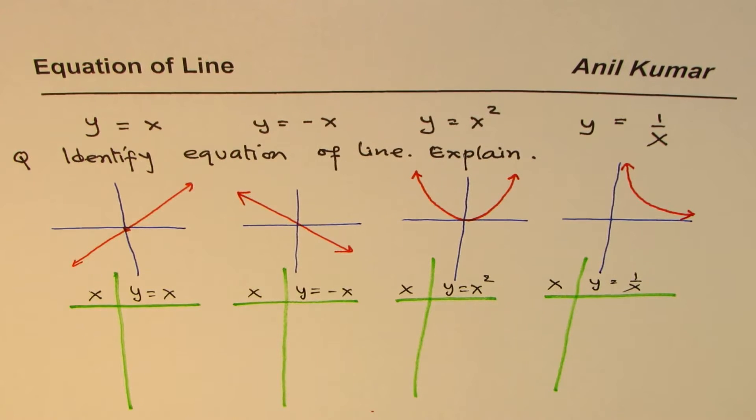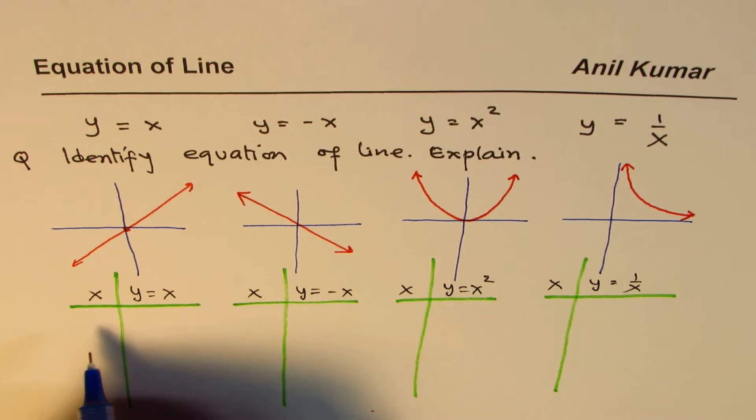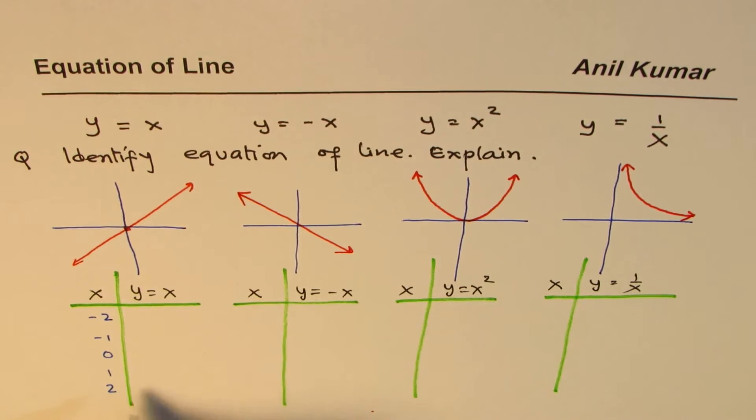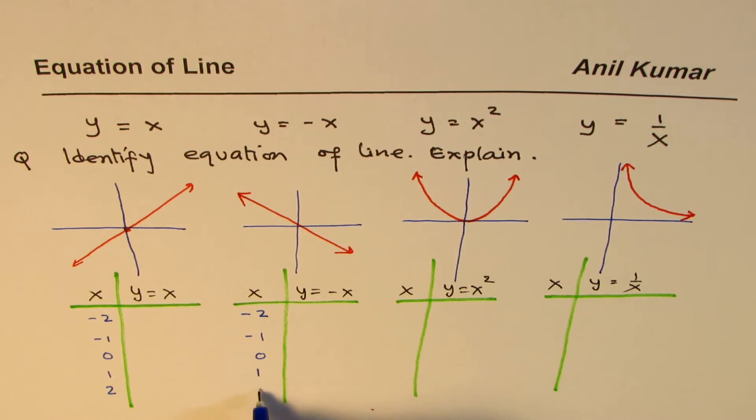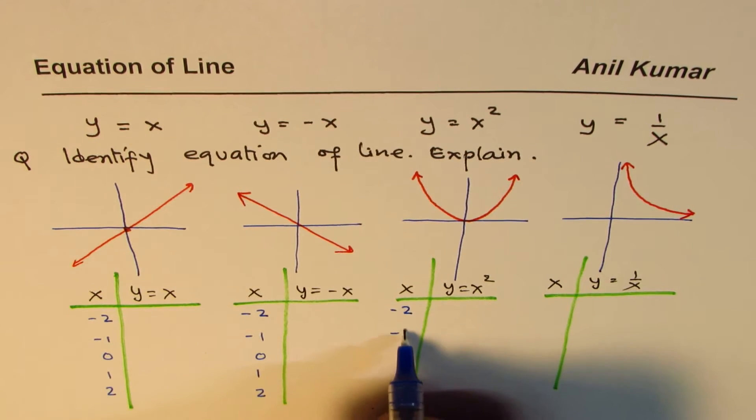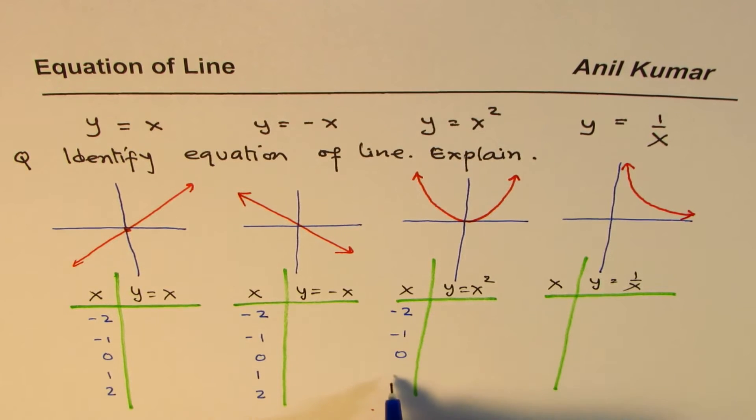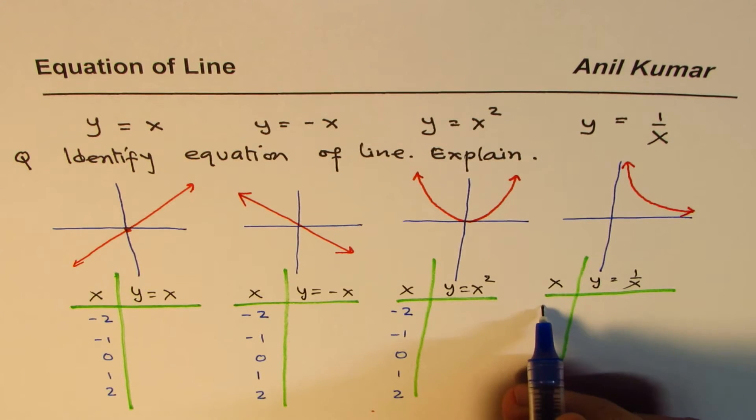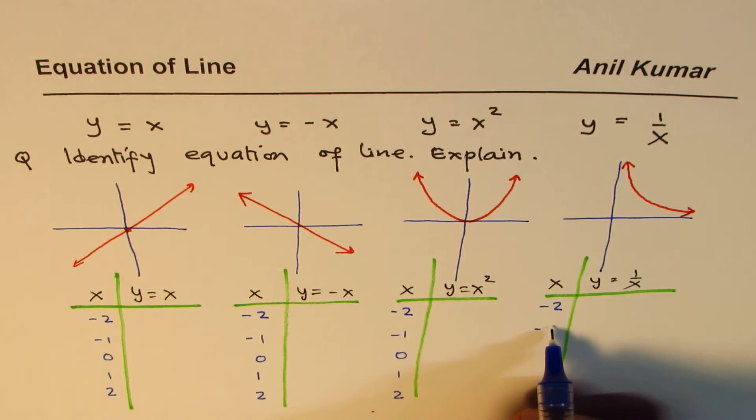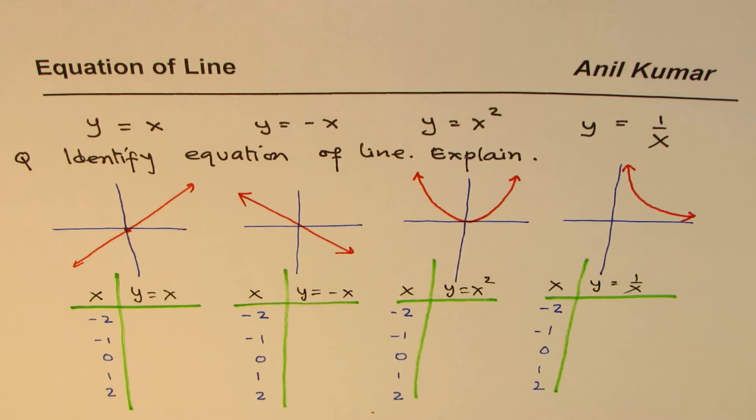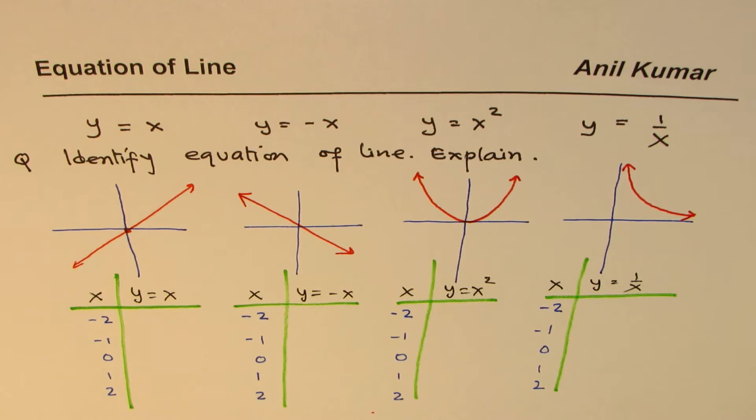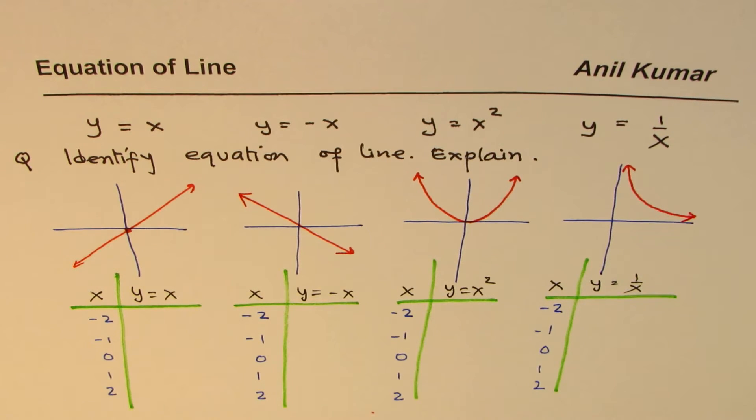Good values to take, we sometimes call them key values, are always minus 2, minus 1, 0, 1, 2. These are, by default, good values to take in such cases. So we'll take X values as minus 2, minus 1, 0, 1, and 2. Always write them in order. It helps to reason out things. If you really have to explain, order is one way to begin with. So don't jumble them up.